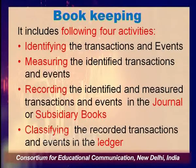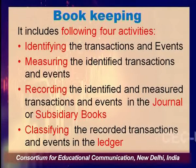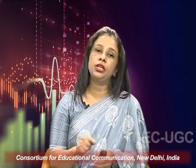The next step is classifying the recorded transactions into the ledger on the basis of their similar nature. Those transactions which are of a similar nature will be posted under one account. For example, cash purchase and credit purchase — all types of purchase, irrespective of cash or credit, will be posted in the purchase account. Similarly, cash sales and credit sales will be recorded in the sales account. So bookkeeping involves these four activities: identifying, measuring, recording, and classifying.